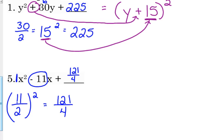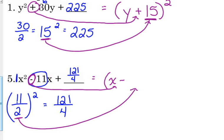That becomes our constant on the end. And then to factor it, it would be x. This one is minus. And we squared 11 over 2. So that's what goes in our parentheses. Every single time.